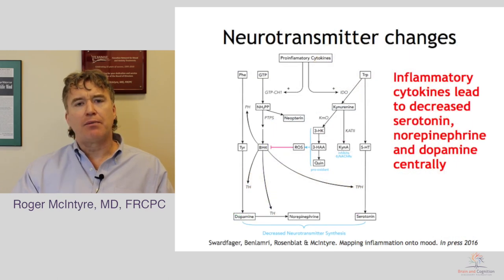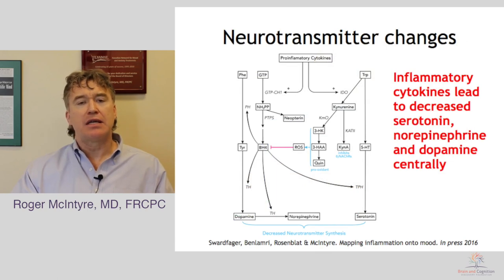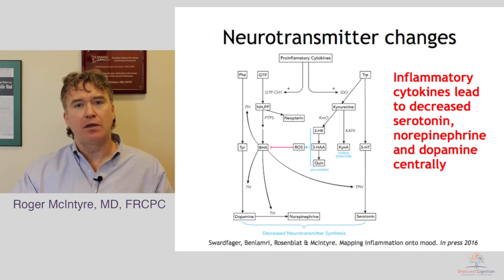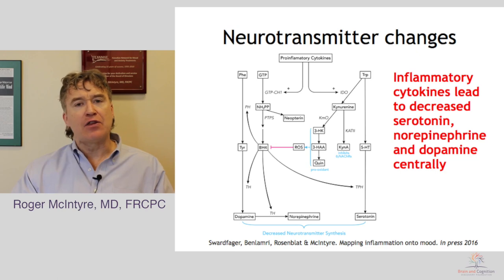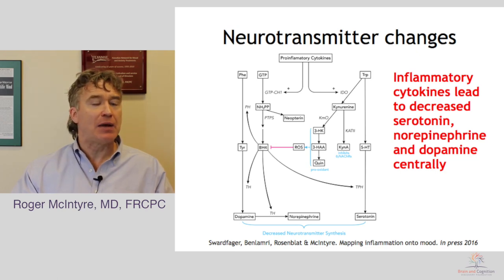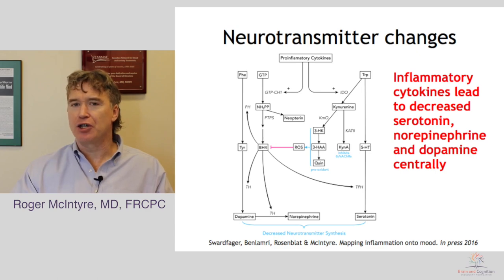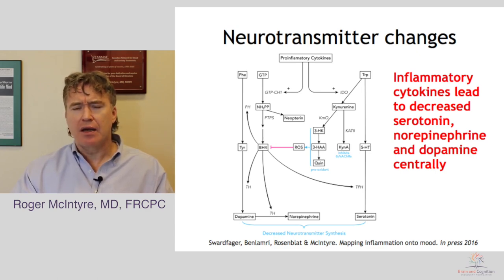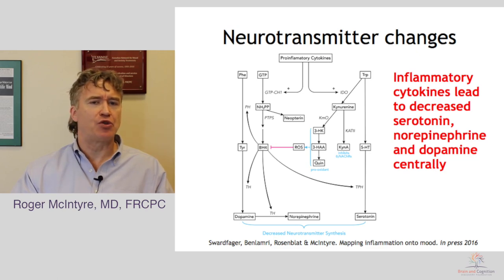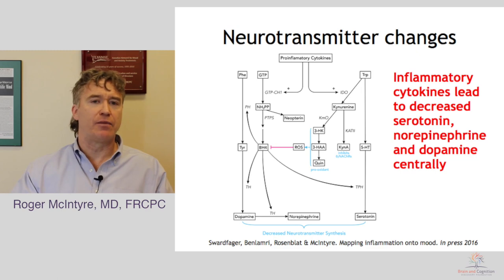We've talked in earlier modules about inflammation and its crosstalk with monoamines. Simply put, as inflammation goes up, we see a reduction in the availability of serotonin and catecholamines like dopamine and norepinephrine. This crosstalk helps explain why so many patients with depression who have increased inflammation also have increased mood disturbance, impulsivity, problems with cognition — both general and social — as well as cognitive-emotional processes.